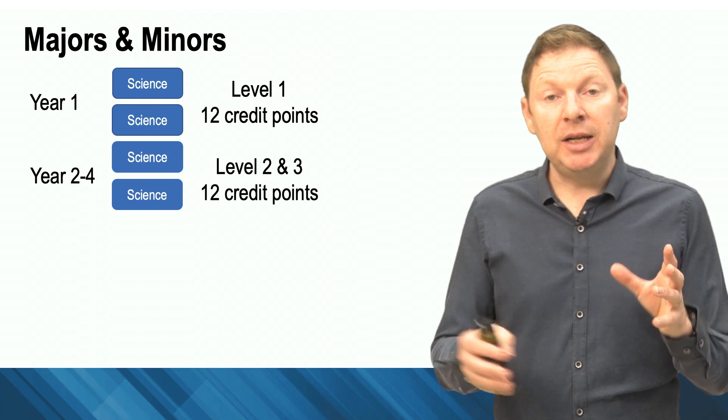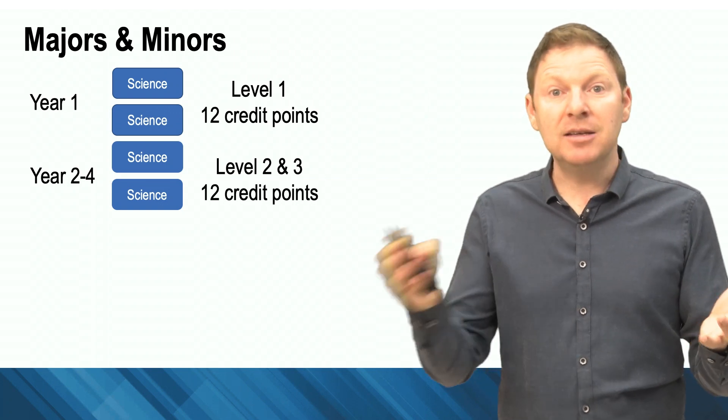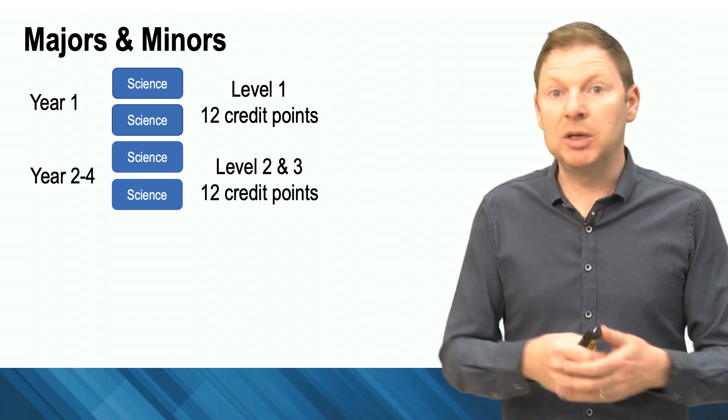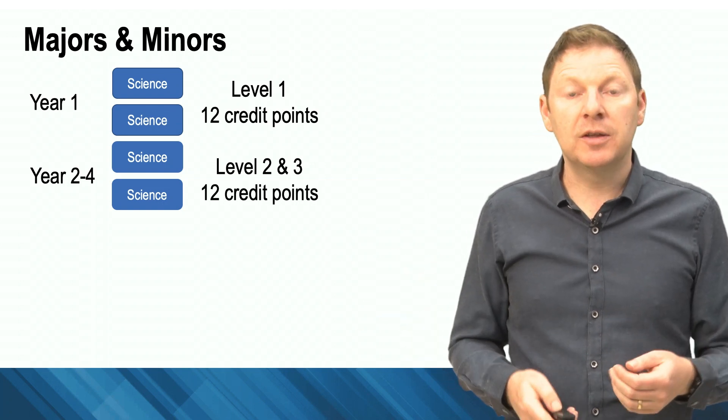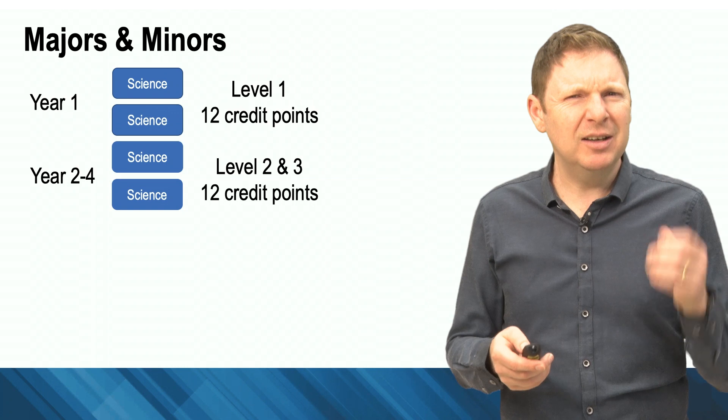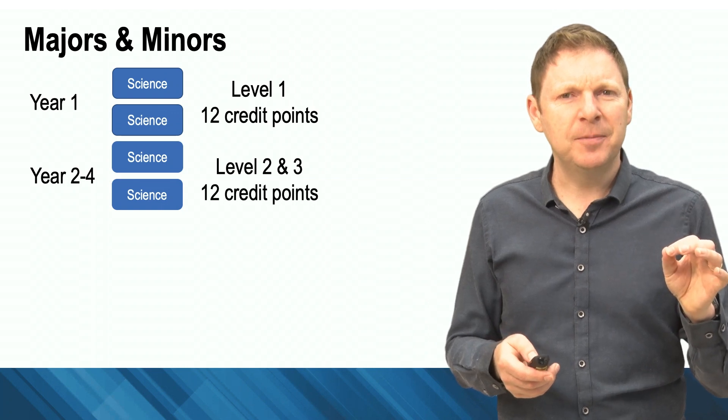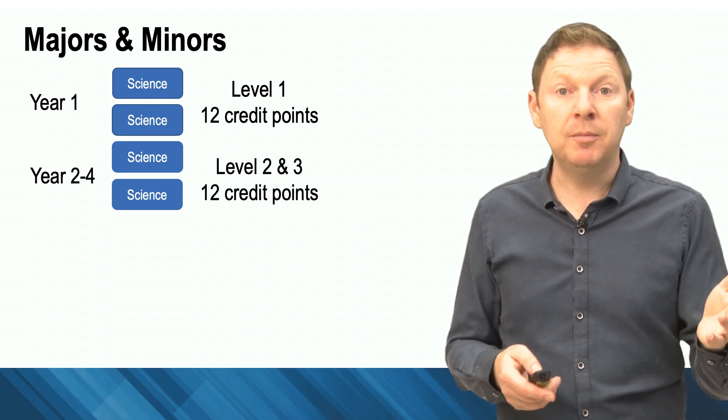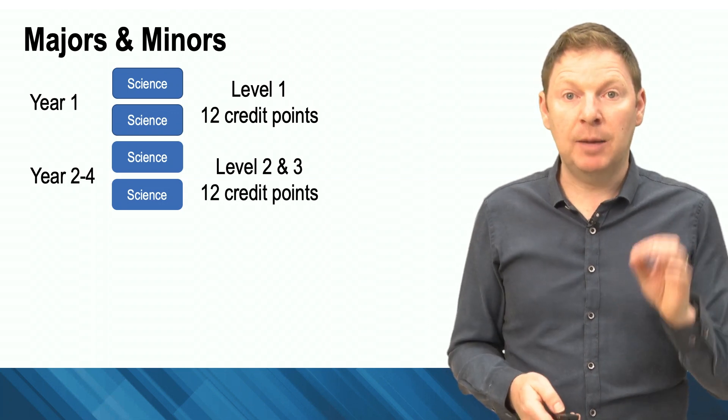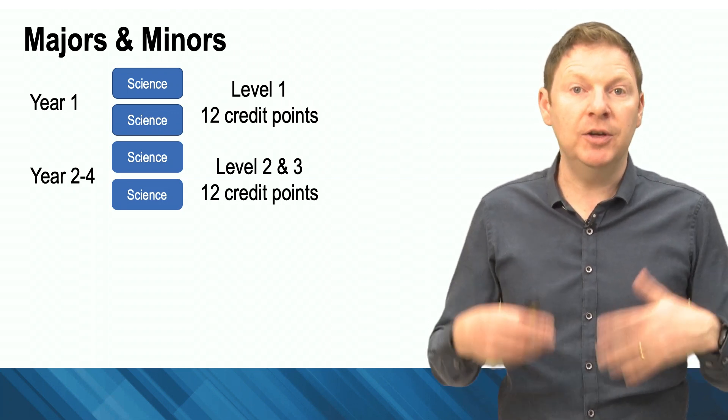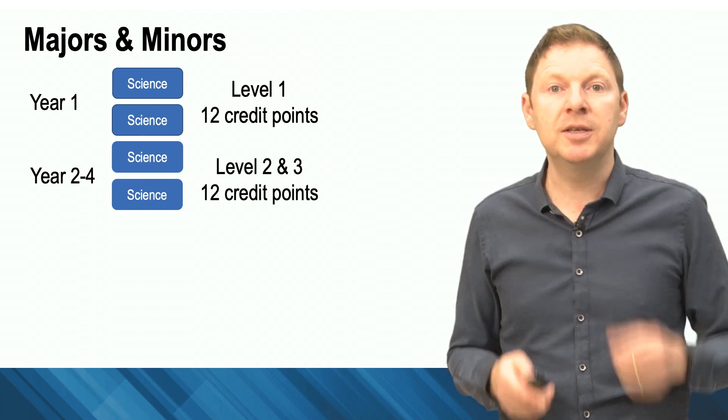So you can also do a minor, and many students will actually do a minor and a major. So it might be that they really want to do a major in physics, but they're really interested in applied maths as well. So they might be able to do both. You can't quite squeeze in two majors in a double degree, but you can do a major and a minor. A minor is only four units - a couple of first year subjects, and then finishing it off with some level two or level three subjects.